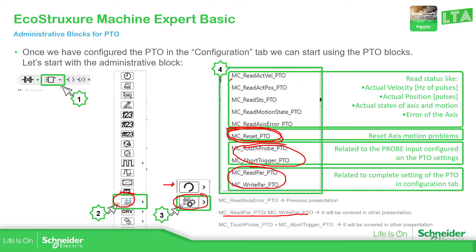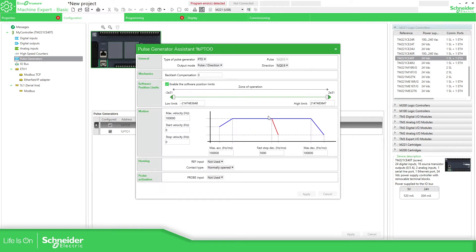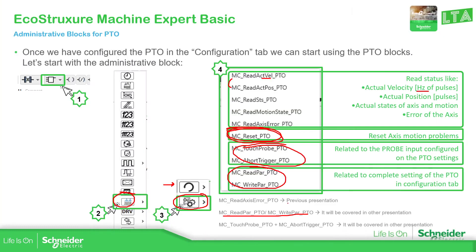The first two elements allow us to see the velocity and the position. Something important here: the velocity is in Hertz, which is related to how we have configured it in our software. There is no RPM or anything like that — it's just the frequency of the pulses that we are sending. This is what we receive on the function block as actual velocity. For the position, it is the number of pulses that we are sending from the PLC to the drive.